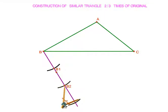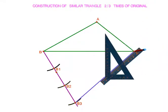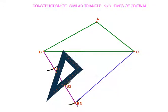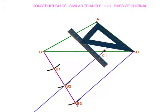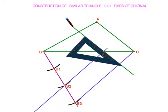Now join B3 with C using the scale and draw a parallel line to B3C through B2, which intersects the BC line at C1. Now draw a parallel line to AC through C1, which intersects BA at A1.